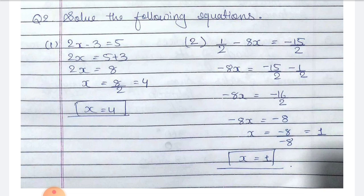So 2x is equal to — we take minus 3 to the other side so it becomes plus — 2x is equal to 5 plus 3. Now 2x is equal to 8. Taking 2 to the other side it becomes division, so x is equal to 8 by 2, which is equal to 4. So the value of x is 4.